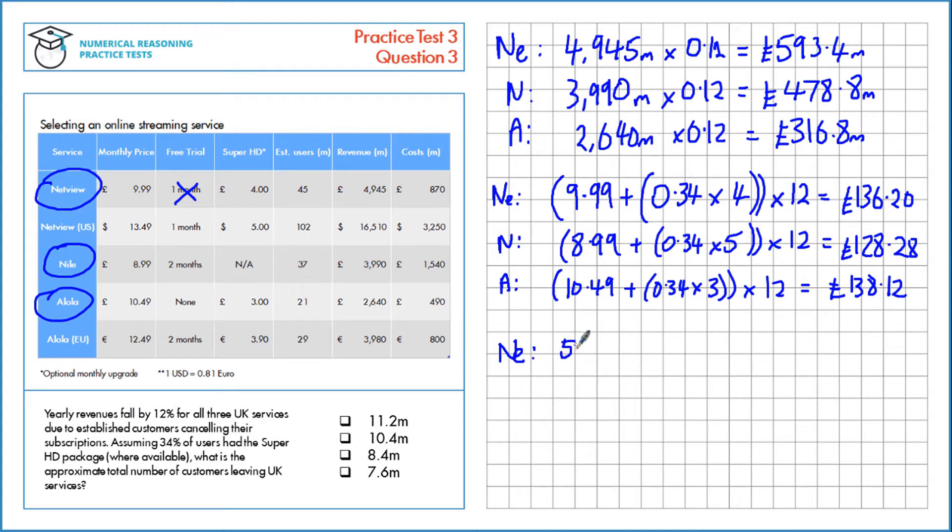For Netview, we're taking this number here, 593.4 million, and dividing by £136.20. It's important when you put this in the calculator to make this million, so that would be 593,400,000. That's approximately 4.4 million users. Same calculations for Niall and for Alola.